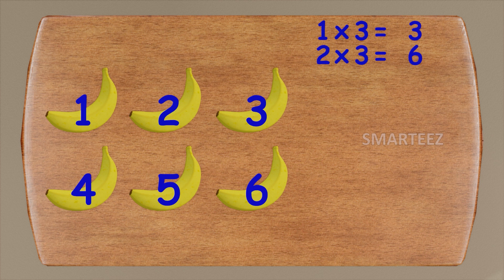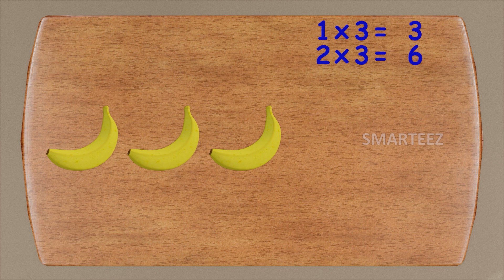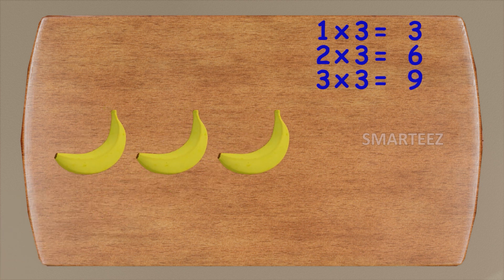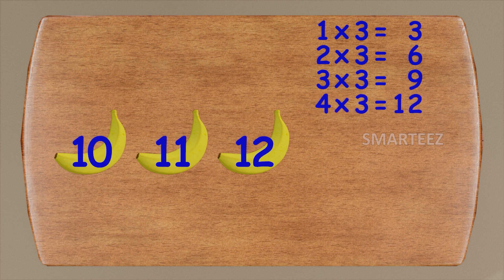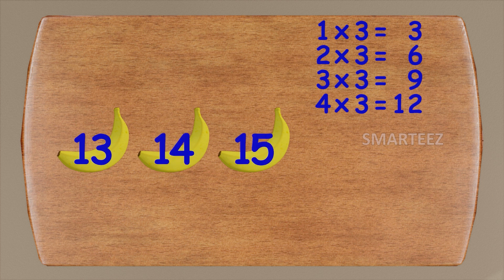We'll add more bananas, three at a time. That's three more bananas. We had six already — this will be seven, eight, and nine. Three times three is nine. Let's add three more. We had nine earlier — this will be ten, eleven, and twelve. Four times three is twelve. Let's add three more. We had twelve earlier — this will be thirteen, fourteen, and fifteen. Five times three is fifteen.